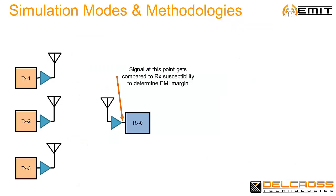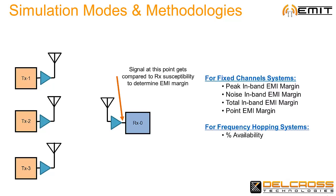EMIT simulates EMI margins at the input of each receiver in the system. System noise and aggressor transmit signals are compared to the receiver susceptibility in order to determine EMI margins as peak in-band, noise in-band, total in-band, and point margins for fixed channel systems.